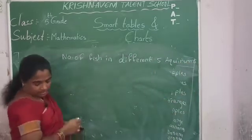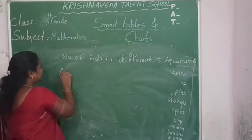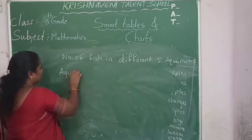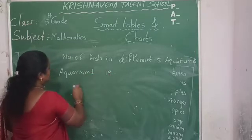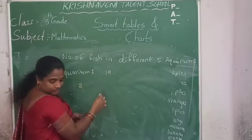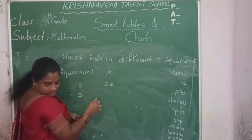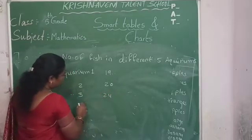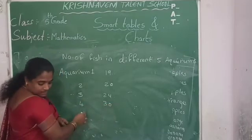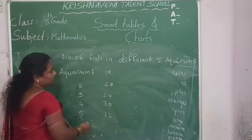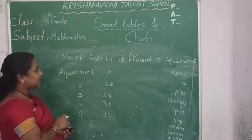The first aquarium contains 20 fishes, the third aquarium contains 24 fishes, the fourth aquarium contains 30 fishes. Now see here how to represent the given data using tally marks.